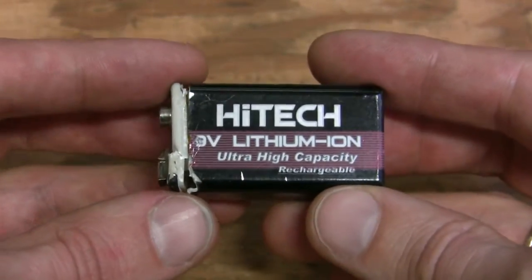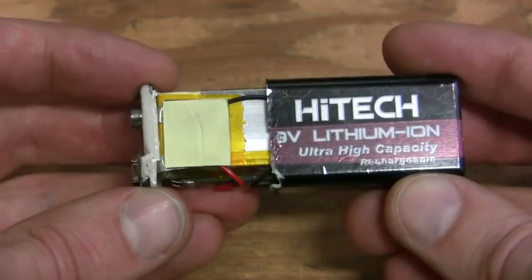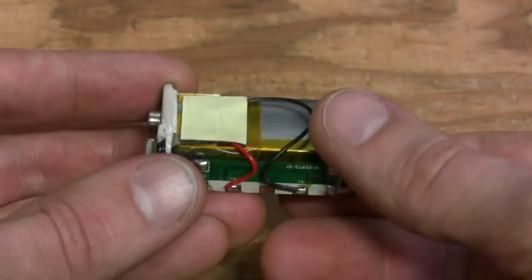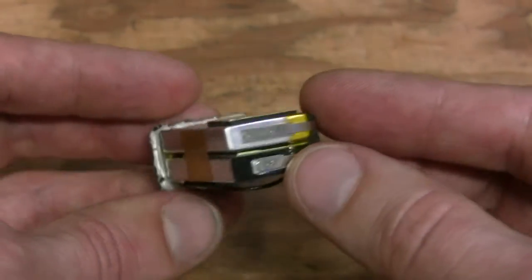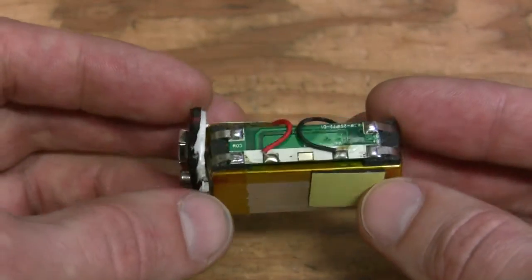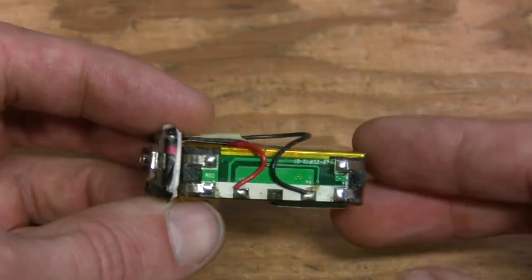So finally let's have a look inside. Here we are. There are two flat lithium polymer cells and a battery management board.